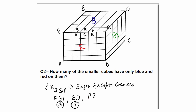Edge CH will also have blue and red, and there will be 3 cubes. So for exactly 2 surface painted, the location is edges except corners. Each edge has 5 cubes; I remove the 2 corner cubes and am left with 3 cubes per edge. There are 4 such edges which have blue and red. So the total answer is 4 × 3 = 12. There will be 12 smaller cubes which have only blue and red on them.